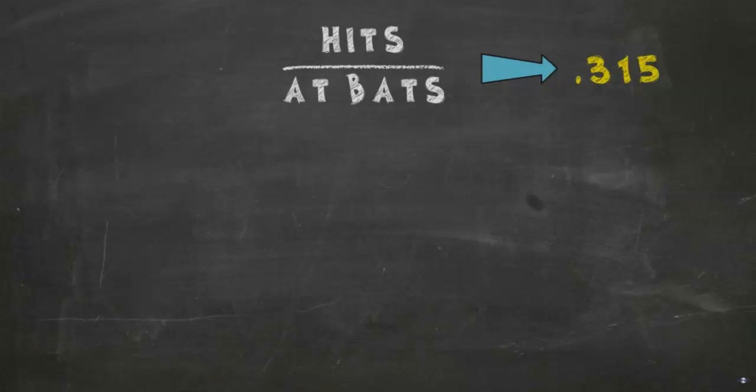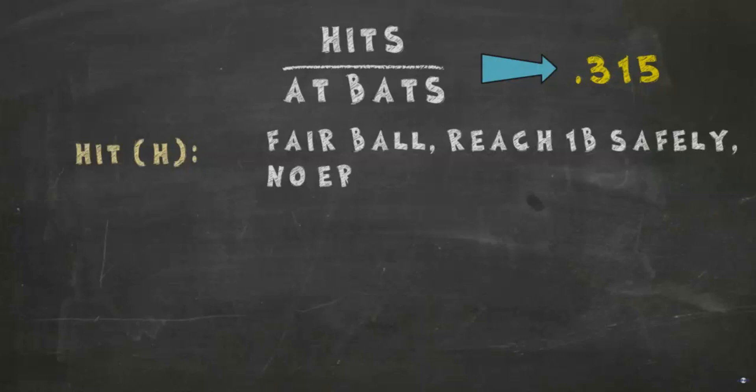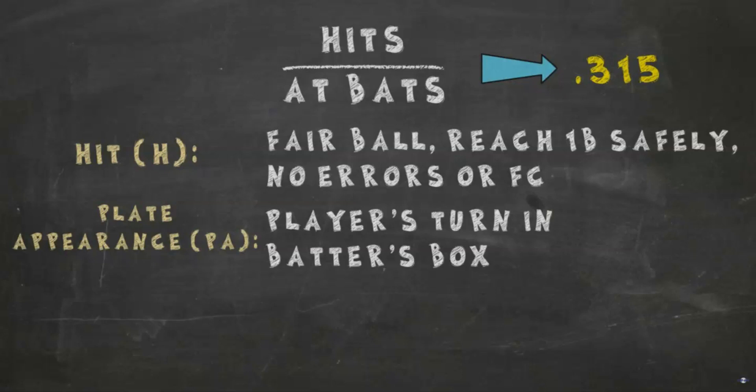At-bats are best explained by bringing up plate appearances. A plate appearance is the name for a player's turn in the batter's box, and at-bats are like a subset of those plate appearances. There are four outcomes that count as plate appearances but not as at-bats: walks, hit by pitch, sacrifice flies, bunts, and interference calls such as catcher's interference.